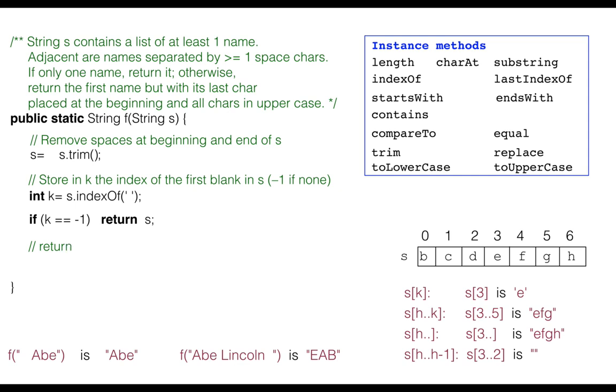Otherwise, we have to construct the string consisting of the last character of the first name, which is just before the blank character s sub k, concatenated with everything that comes before s sub 0 dot dot k minus 2, but all in uppercase.